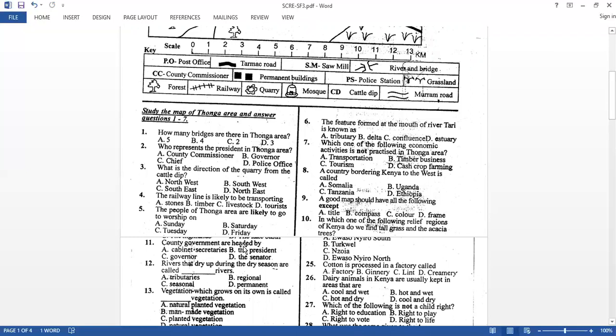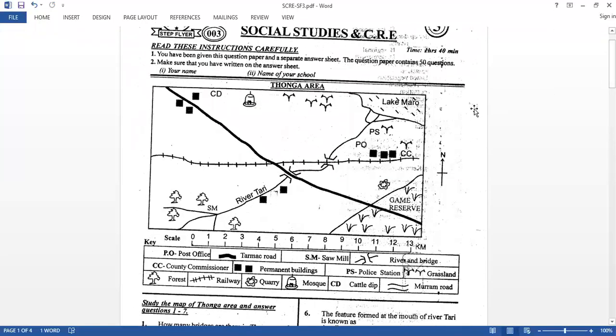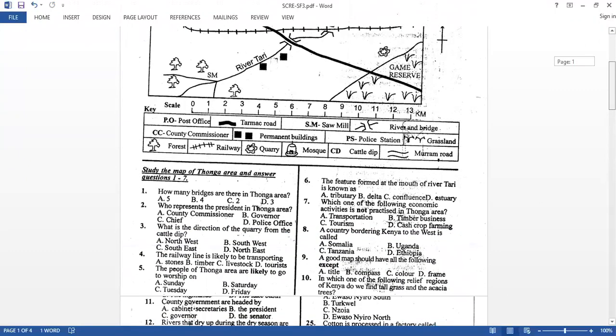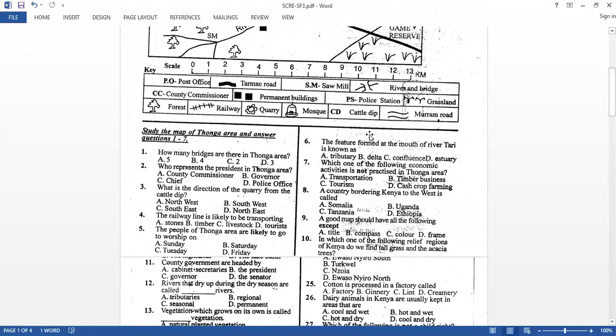County governments are headed by, sorry, number six. The feature formed at the mouth of River Tari is, so this feature here is what we call a delta. The same way River Tana is draining its water into the Indian Ocean. Which one of the following economic activity is not practiced in Thonga area? So transportation, yes, we have road, Tamak road, and also railway. Timber business, yes, we go to the forest and the sawmill. Tourism, yes, there is game reserve. Cash crop farming, there is no cash crop that is being grown in this area. So you can say that it is not forming part of the economic activity that is practiced in the area.